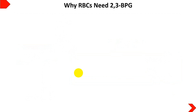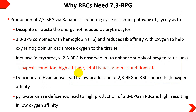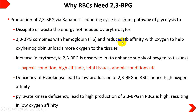Why do red blood cells need 2,3-bisphosphoglycerate? First, the Rapoport-Luebering Cycle is important for dissipation of energy when erythrocytes have no energy need, since glycolysis is the sole energy pathway in erythrocytes. Second, 2,3-BPG combines with hemoglobin and reduces hemoglobin's affinity for oxygen, helping oxyhemoglobin unload more oxygen to the tissues.